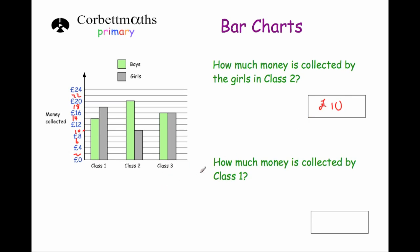Next: how much money is collected by class 1 in total — so that's the boys and the girls. The boys collected £14 in class 1 and the girls collected £18. Adding those together: 8 plus 4 is 12, carry the 1; 1 plus 1 plus 1 is 3. So in class 1 they collected £32.